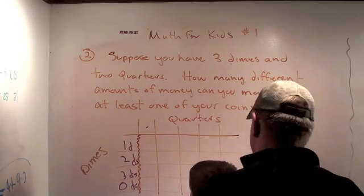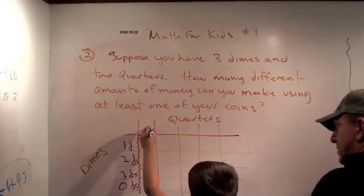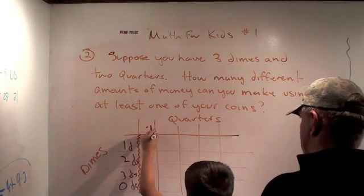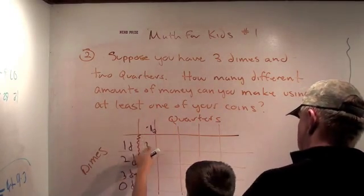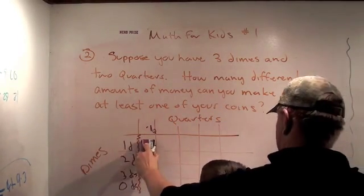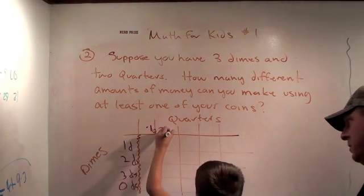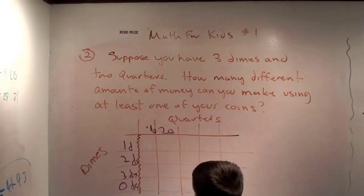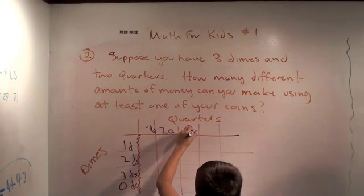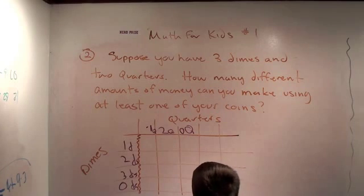Zero dimes. Well, starting with these boxes. This one up here. How many different amounts of quarters can you use? You can use one. One quarter. Okay. No, no, no, no, no. Over here. Cross this way. Here. Two quarters. Yeah. And then, you can, and we can use zero, zero quarters.